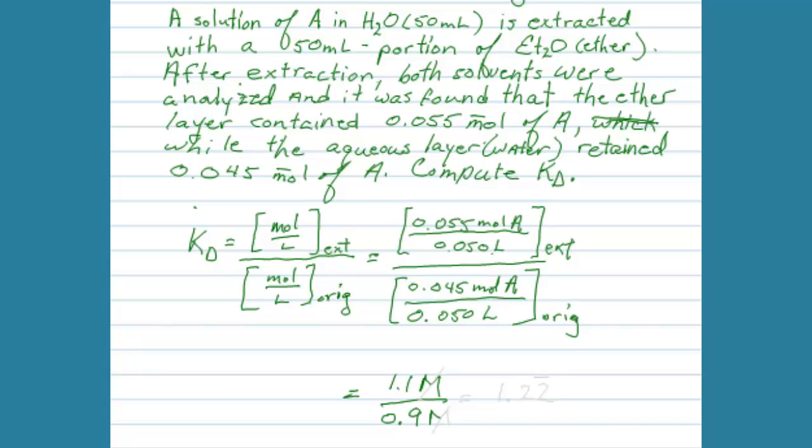And then 0.045 moles of A were in the original solvent after the extraction took place, and there were 0.050 liters of the extracting solvent. And when we do this math we wind up simplifying to 1.1 molar over 0.9 molar. And because the concentrations are both in molarity, those values are going to cancel out. So please notice that the equilibrium constant here, the KD value, is dimensionless. There are no units. Furthermore, we can now make a statement by looking at the magnitude of this number being 1.22 indicates a KD value that is greater than 1, and therefore the extraction is actually going to be favored in the direction of the extracting solvent.